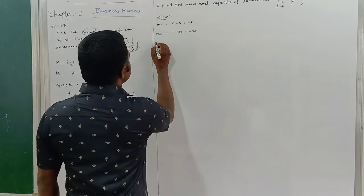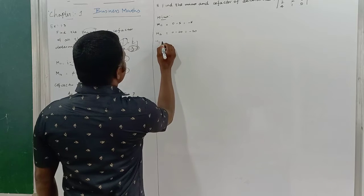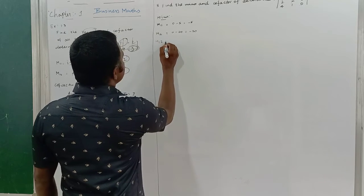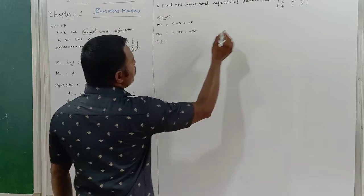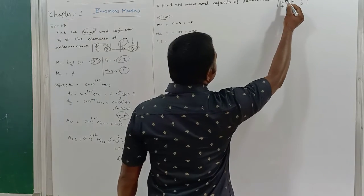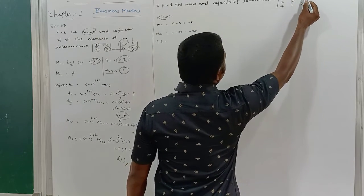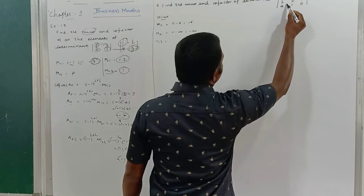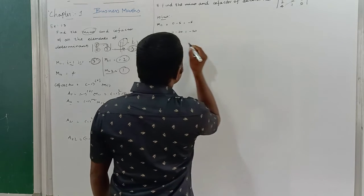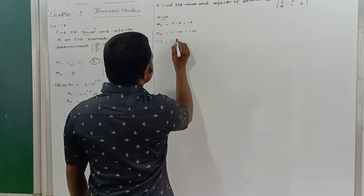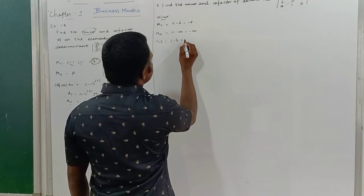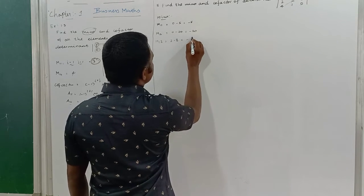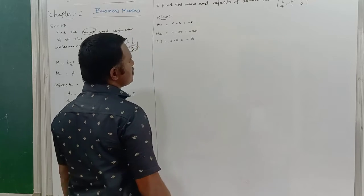Minor M13: first row, third column. I remove those two terms, getting 2 and minus 8. So 2 minus 8 = minus 6. M13 = minus 6.